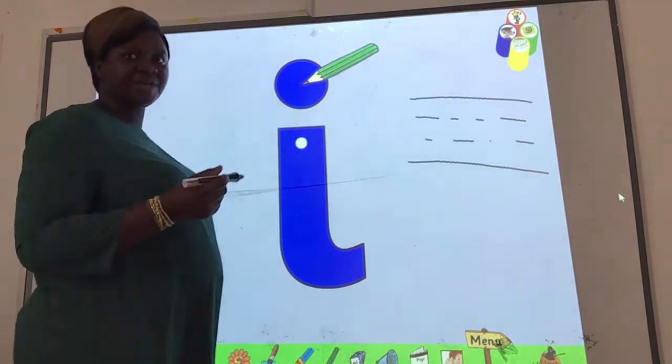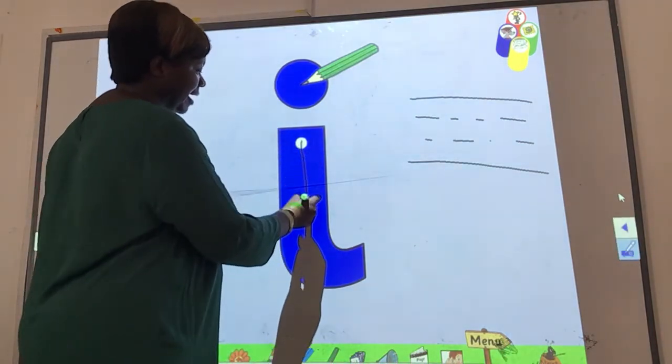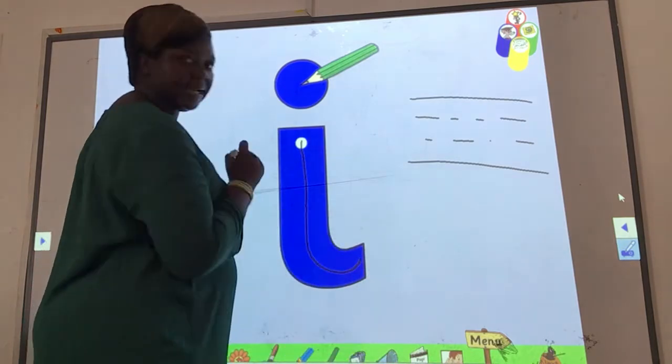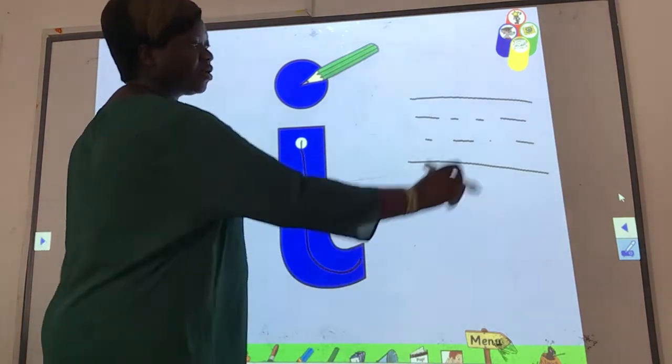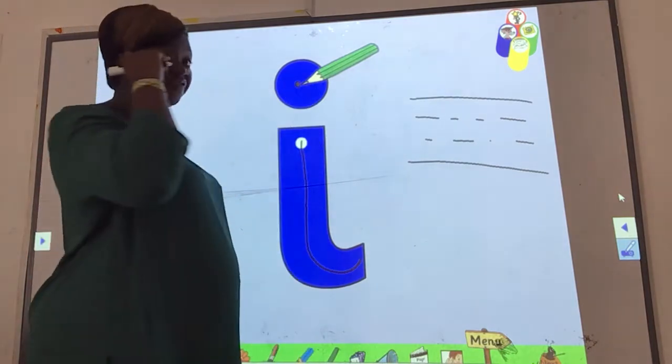That's why we are doing the lines. You need to use your lines now. Stand in line, make a small tail. Forward. The tail goes forward. And a dot. Don't forget the dot.